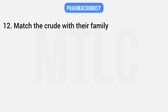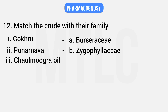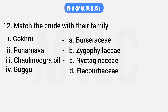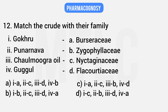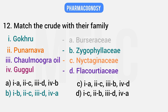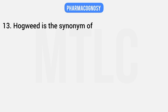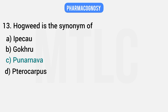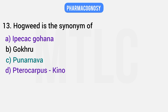Twelfth question: match the crude drug with its family. Gokru — Zygophyllaceae; Punarnava — Nyctaginaceae; Chaulmoogra Oil — Flacourtiaceae; Guggul — Burseraceae. The correct match is Option B. Thirteenth question: Hogweed is the synonym of which drug — Ipecac, Gokru, Punarnava, or Pterocarpus? The correct answer is Punarnava. Ipecac has its own synonyms, and Pterocarpus is Kino.